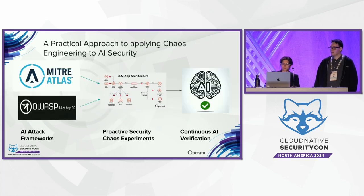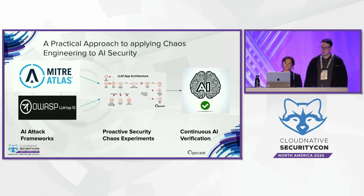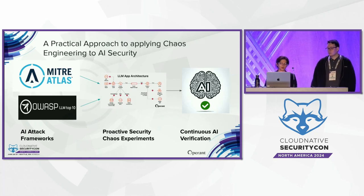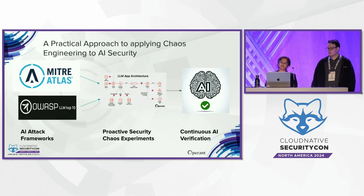We've built a practical approach to apply chaos engineering principles to AI security. As a baseline we've taken the MITRE ATLAS framework, which is adding more TTPs for LLM security, and also the OWASP LLM Top 10 risks. We've codified them as chaos experiments you can run against your own LLM app architectures to continuously verify AI behavior across dev, staging, and production. To this end, we've built an open source tool called SecOps Chaos.